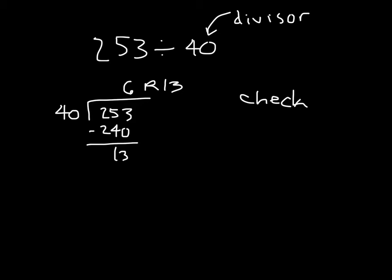We take the answer, which was 6, and we multiply it by that divisor, which was 40, and 6 times 40 is 240. We add that back together to get 253, and that needs to match our whole that we were dividing, so that is a valid answer. 253 divided by 40 is 6 with the remainder of 13.